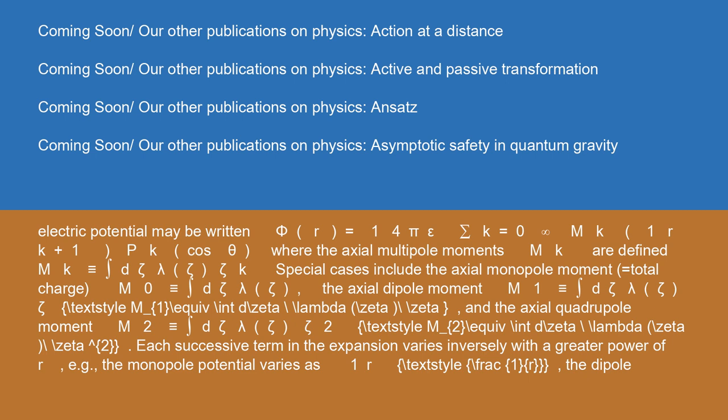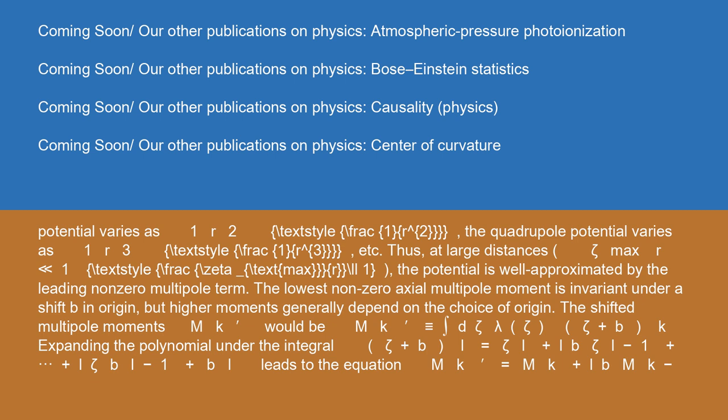Each successive term in the expansion varies inversely with a greater power of r: the monopole potential varies as 1/r, the dipole potential varies as 1/r², the quadrupole potential varies as 1/r³, etc. Thus at large distances (ζ_max/r ≪ 1), the potential is well approximated by the leading non-zero multipole term.